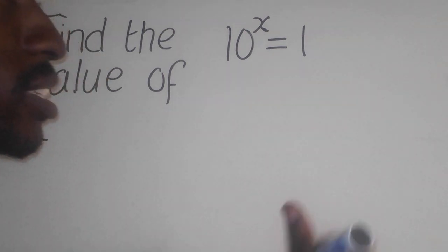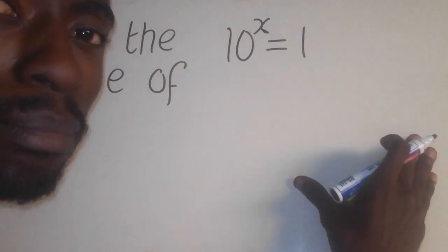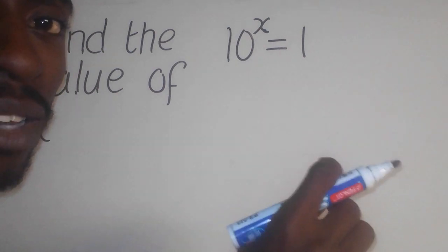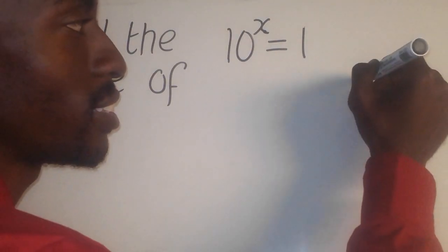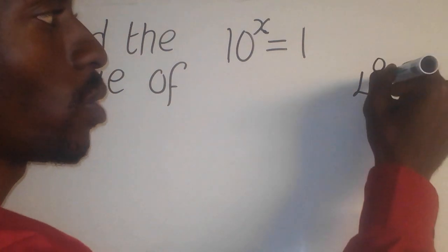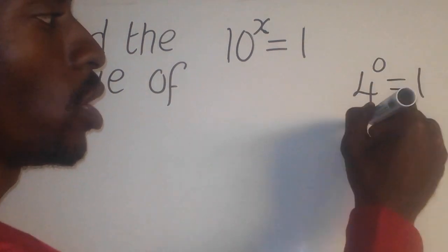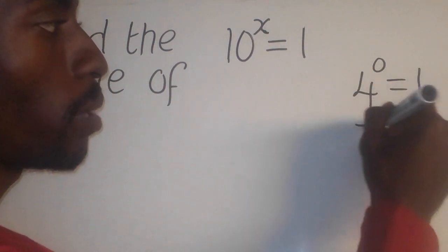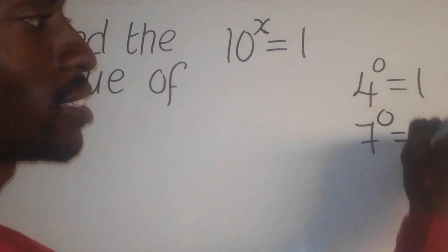We know that one of the laws of indices is that any number to the power 0 is 1. For example, if I say 4 to the power 0, what is the answer? It is 1. When I say 7 to the power 0, what is the answer? It is 1.